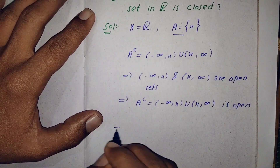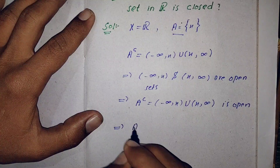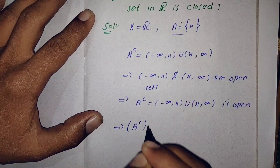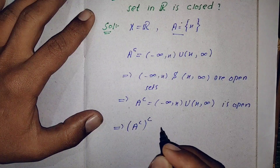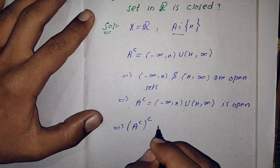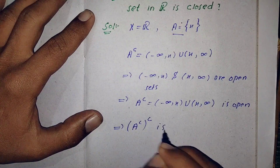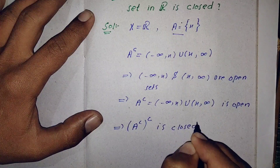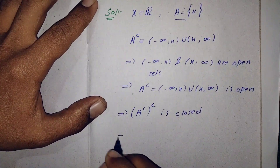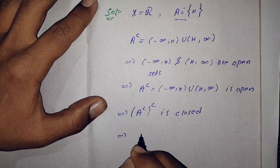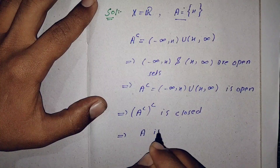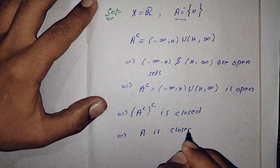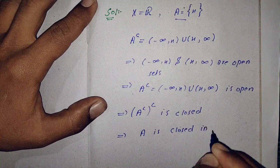So if we take its complement again, it will give a closed set. That is, (A complement) complement is closed, which implies that A is closed in R.